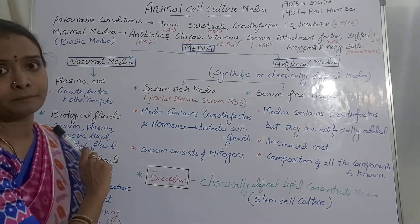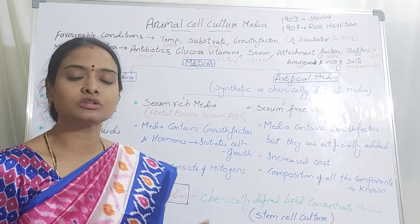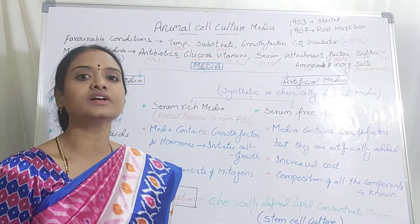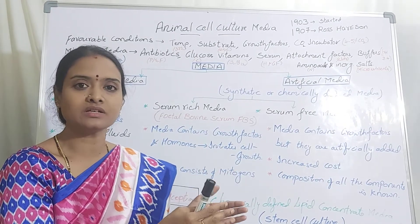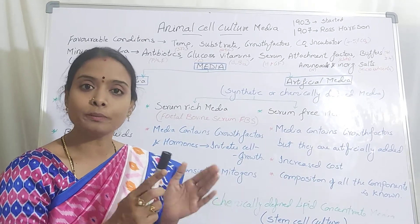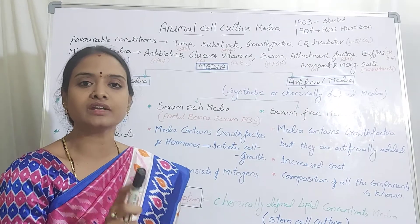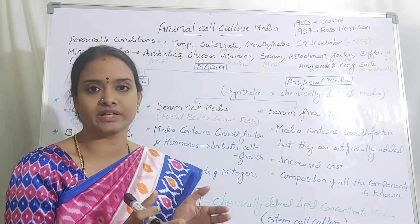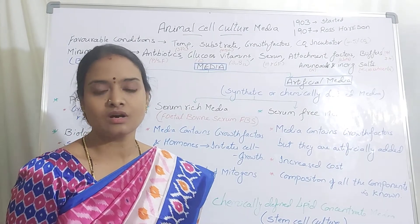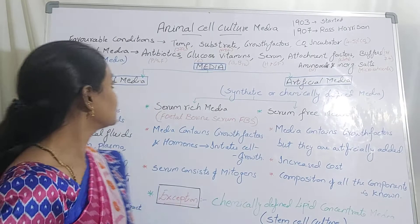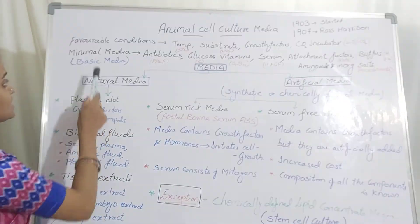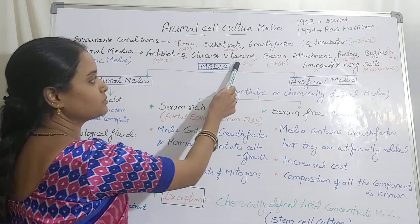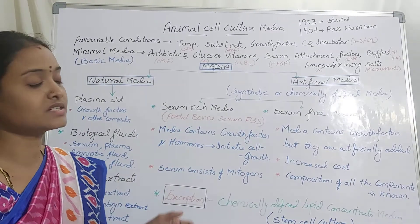Looking at the media: the media provided is not suitable for all cells in the same composition. Kidney cells, liver cells, and skin cells all require the same components, but their composition may differ. However, there are basic components required for all types of cells — all cell types can be grown in basic media, also referred to as minimal media. This minimal media consists of antibiotics, glucose, vitamins, serum, attachment factors, buffers, amino acids, and inorganic salts.